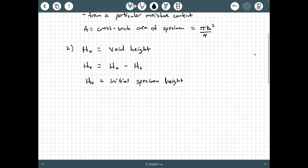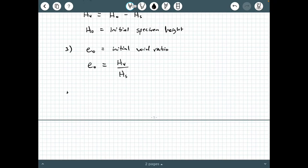The third item is calculating the initial void ratio, E naught. This equals the height of the voids divided by the height of the soil solids. Pretty straightforward so far.